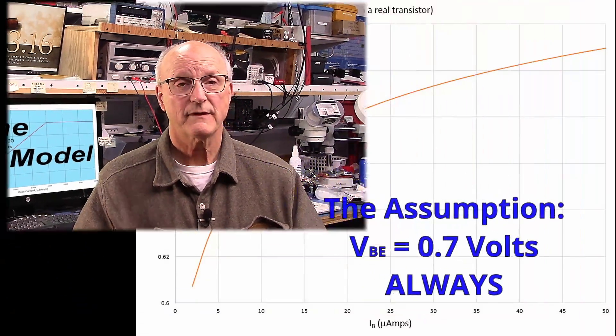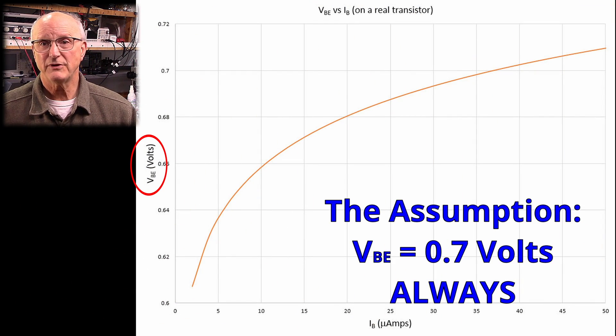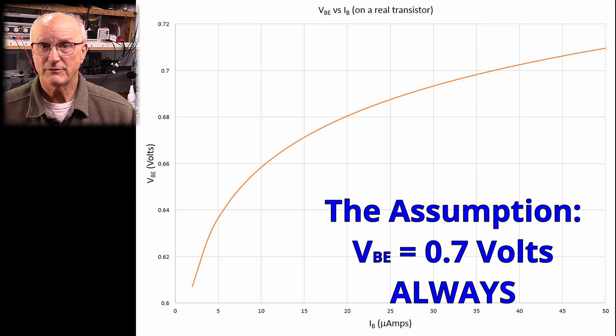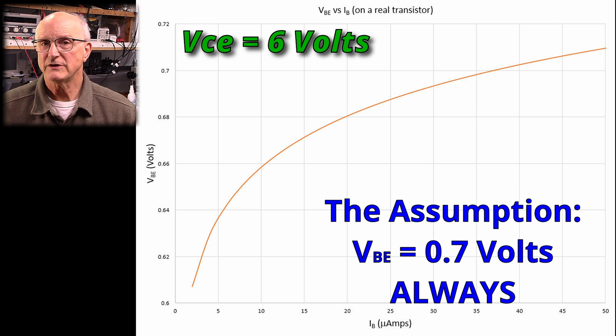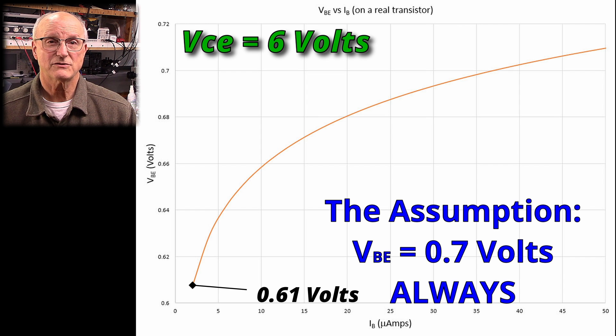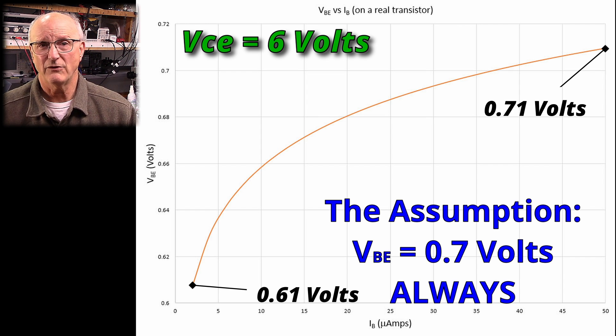So how does this model compare to a real-world transistor? The first assumption of our model is that the base-emitter voltage achieves 0.7 volts and stays there. Here is a graph of the base-emitter voltage plotted against the base current, made using real-world data from a real transistor on the bench with the collector-emitter voltage set at a fixed 6 volts.